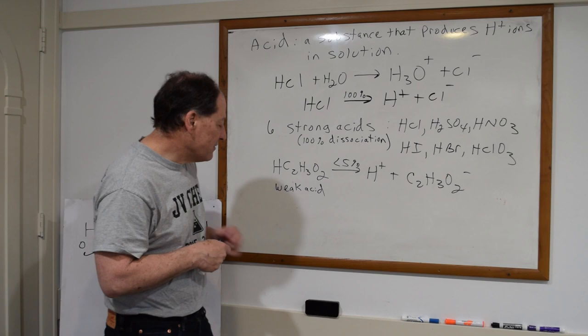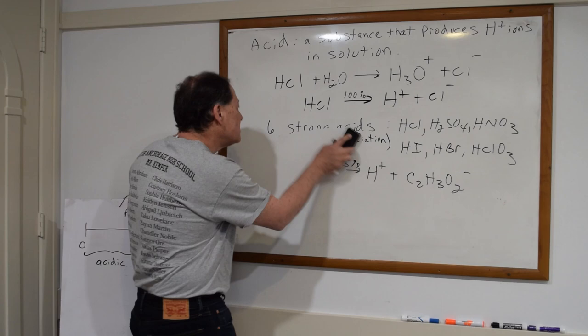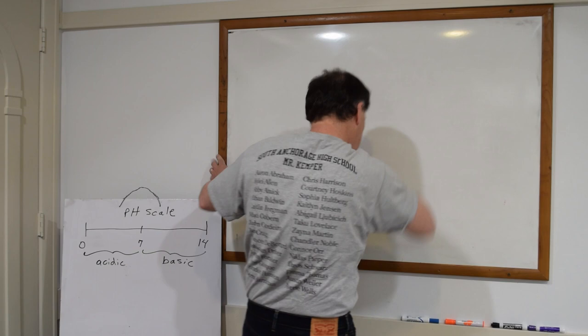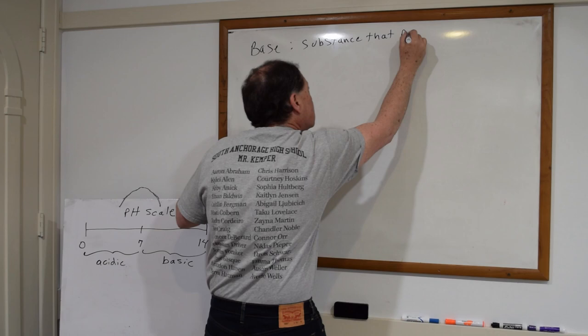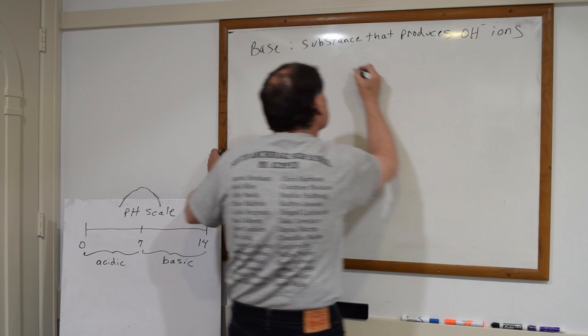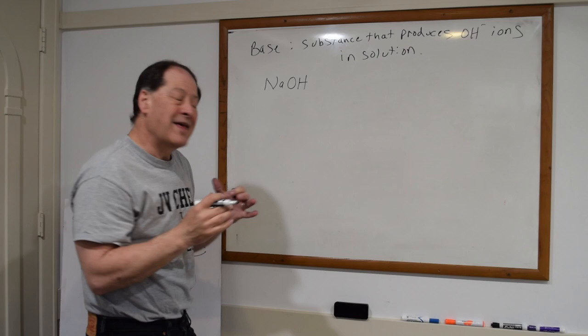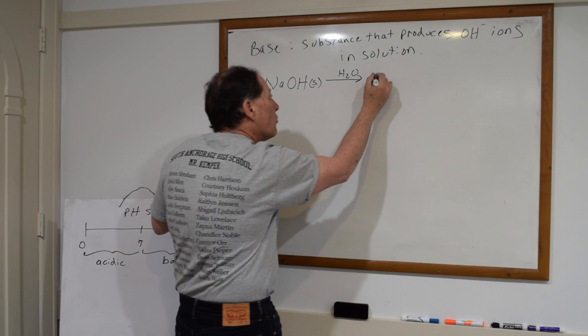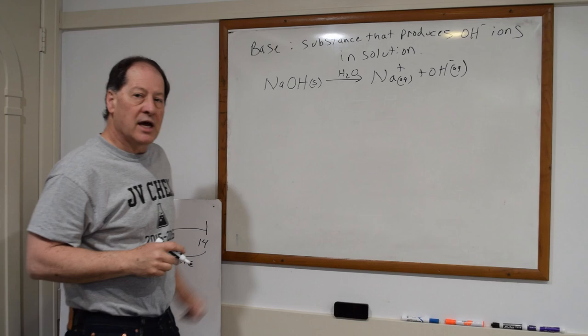That's the definition of an acid — they give you some other information in the Canvas module videos. Now let's look at bases. A base is a substance that produces OH⁻ ions in solution — hydroxide ions. The most common one you're familiar with is sodium hydroxide. If I put that in water, the water is going to break apart those sodium hydroxide units and form sodium ions and hydroxide ions.